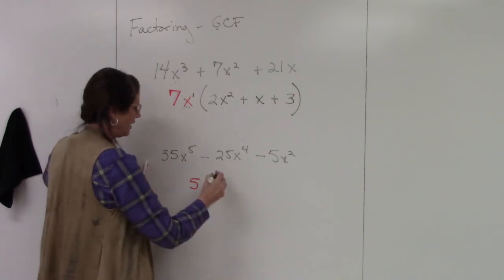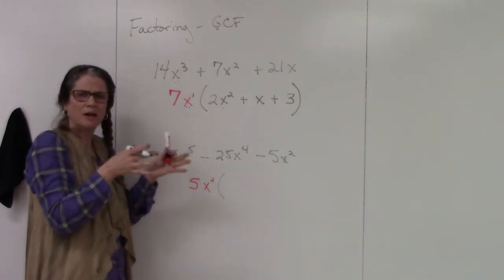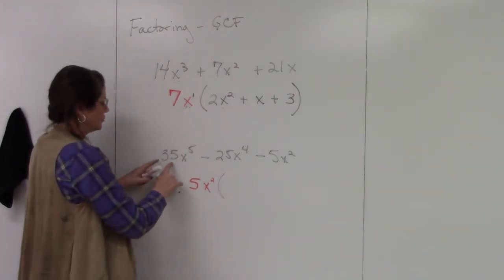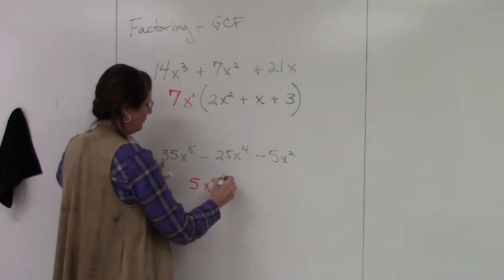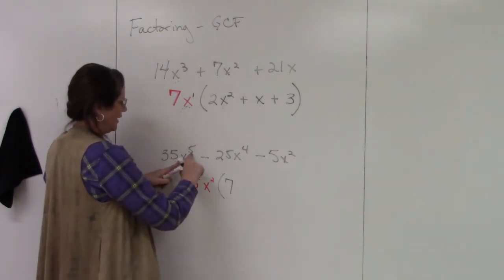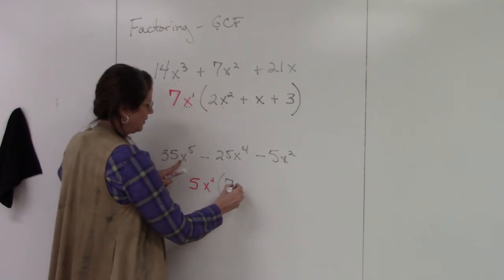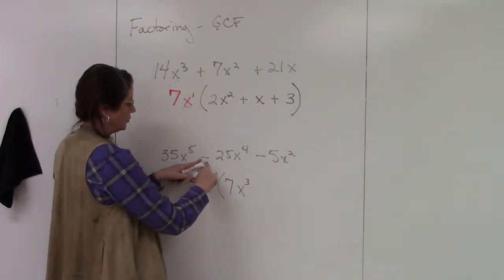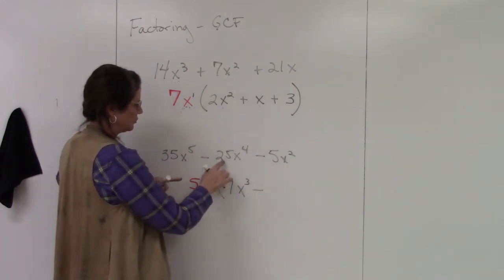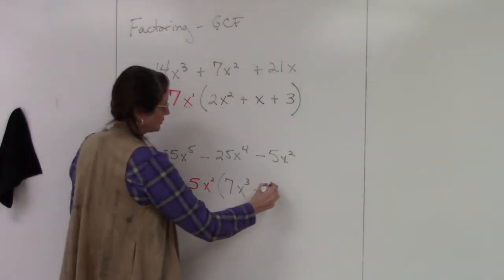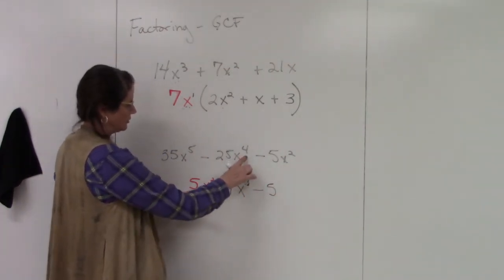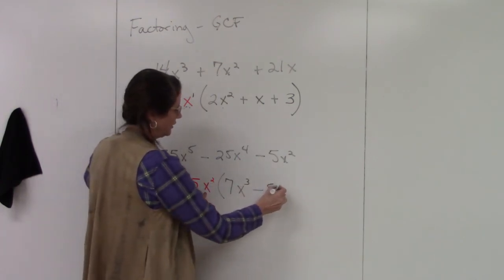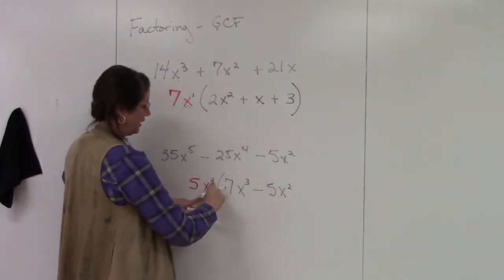And then what's left goes on the inside of parentheses. So 35 divided by 5 is 7. x⁵ divided by x² is x³ because I'm subtracting the exponents. Use the same sign. 25 divided by x is 5. x⁴ divided by x² is x² because 4 minus 2 is 2.